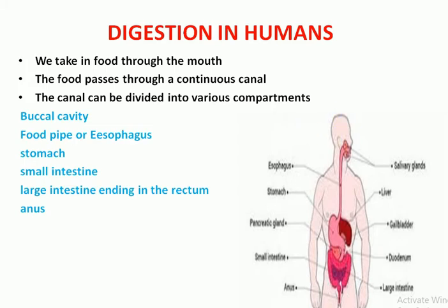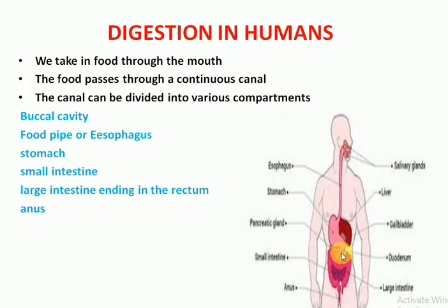The main compartments of the alimentary canal are: buccal cavity, food pipe or esophagus, stomach, small intestine, large intestine, and finally the anus.